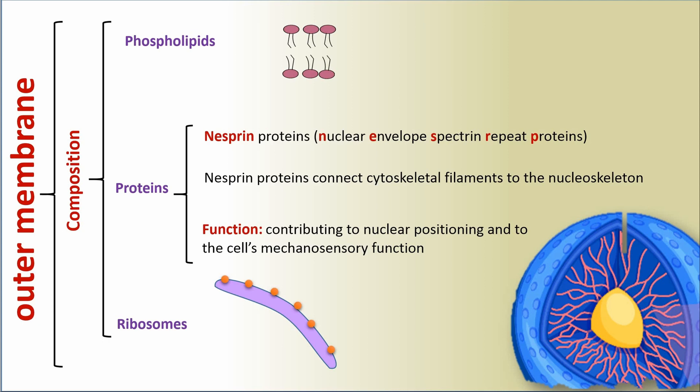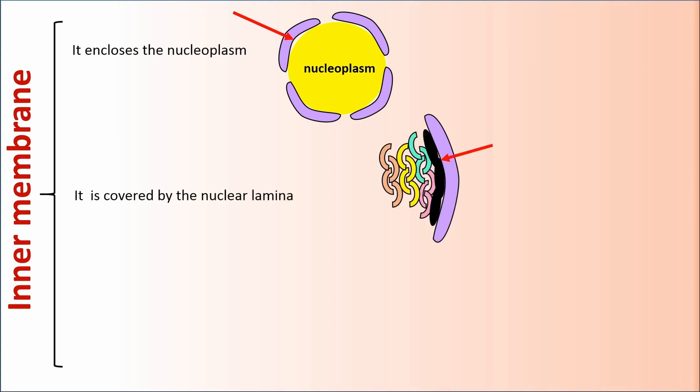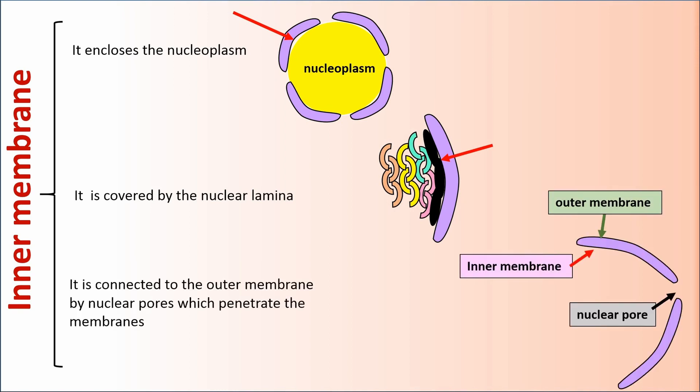Other composition of outer membrane are ribosomes. Inner membrane. It encloses the nucleoplasm. It is covered by the nuclear lamina. It is connected to the outer membrane by nuclear pores which penetrate the membranes.